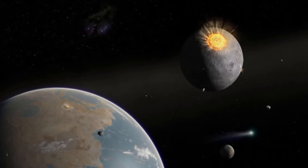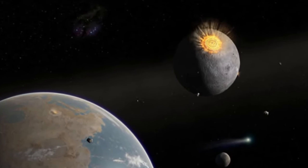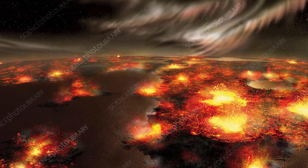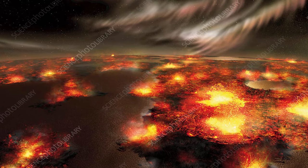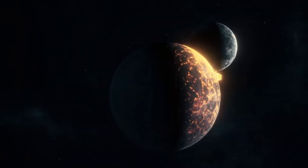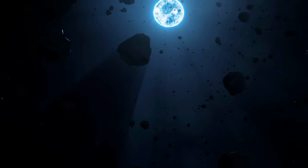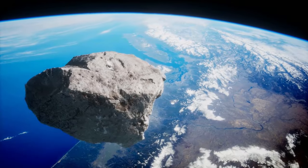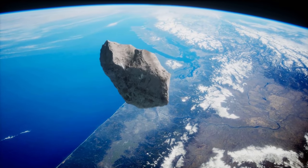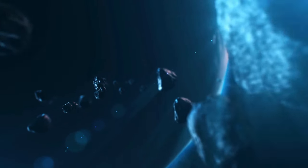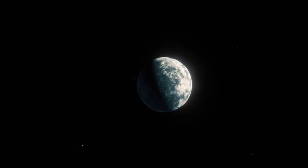Firstly, these impacts contributed to the ongoing melting and reshaping of Earth's surface. The energy released by these collisions further maintained the molten state of the early Earth and potentially influenced the formation and composition of the early crust. Secondly, these meteorite impacts had significant implications for the origins of life on Earth. It's hypothesized that these collisions could have brought with them water and organic compounds, essential ingredients for life, from the far reaches of the solar system.